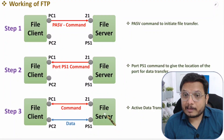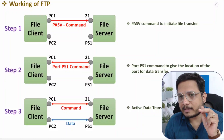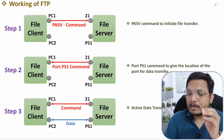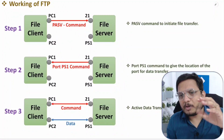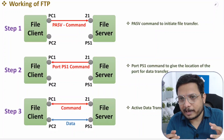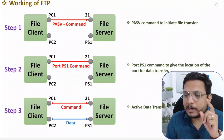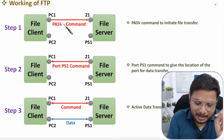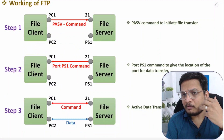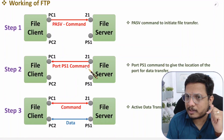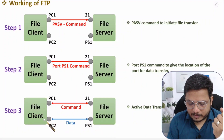The file client can upload data to the file server, download data from the file server, or access data on the file server. There is a difference between download and access: download means you take the complete file to your system, while access means the file remains on the server and you are just viewing it without downloading. All three combinations are possible with FTP.